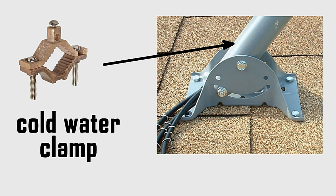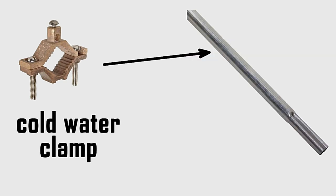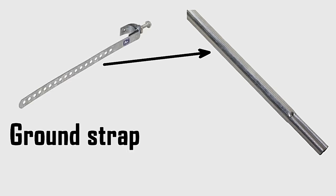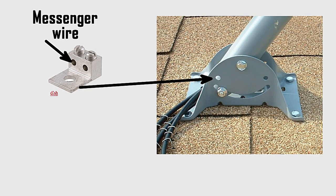And you're going to connect this to your antenna mast. Now you can use the cold water clamp, or some satellite dish masts have a hole specifically designed for lug nuts, as we call them. That way you can connect your messenger wire securely.